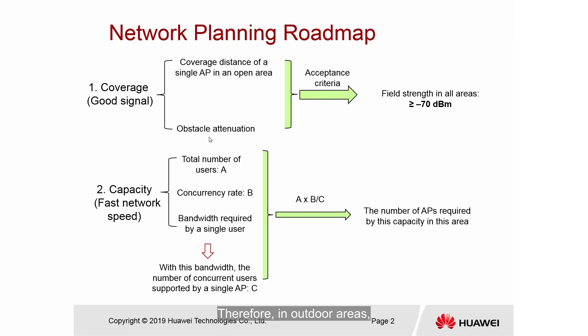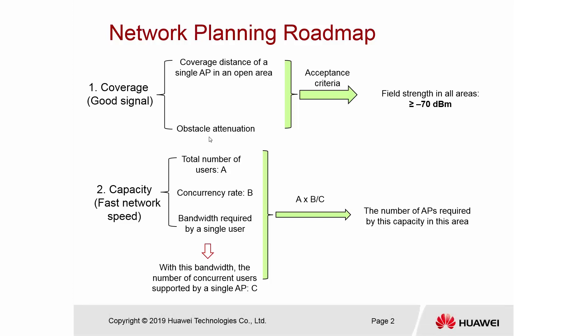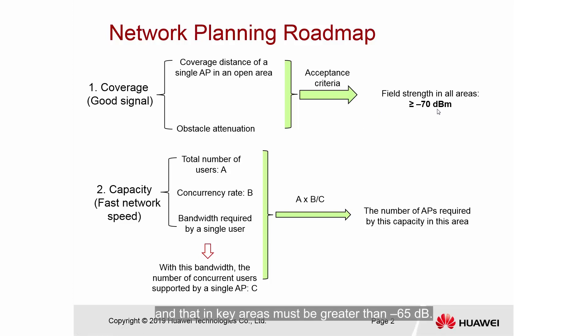Therefore, in outdoor areas, signal coverage that passes through obstacles is not considered. Another difference between outdoor and indoor coverage is that the field strength in outdoor areas is smaller than that in indoor areas. The field strength in indoor areas must be at least -65 dB, while in outdoor areas it must be greater than -70 dB, and in key areas greater than -65 dB.